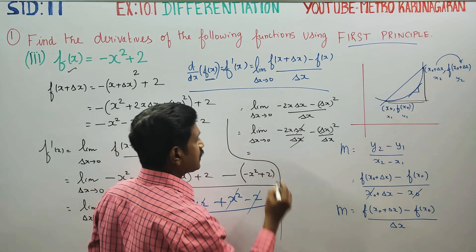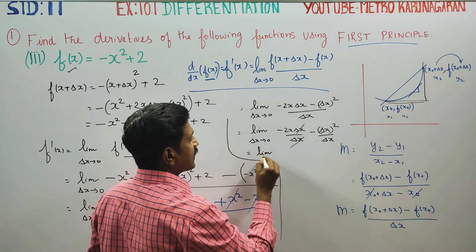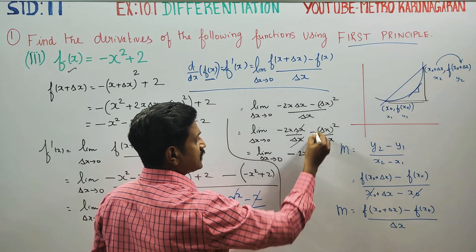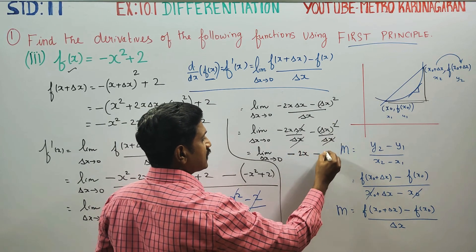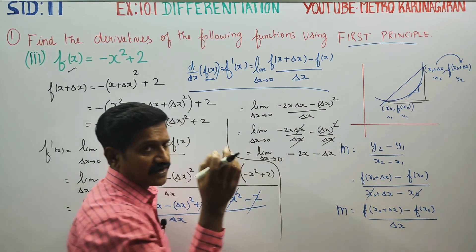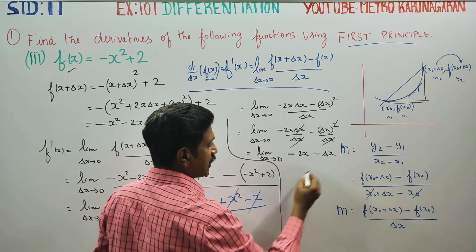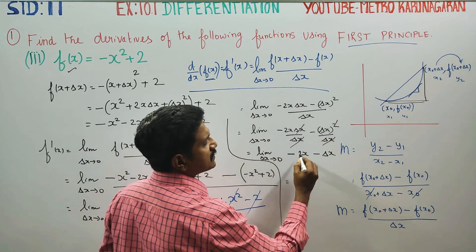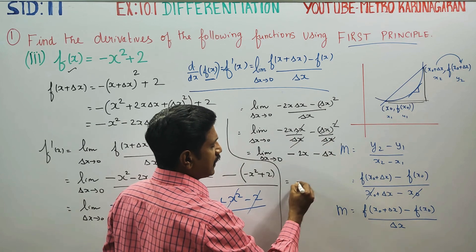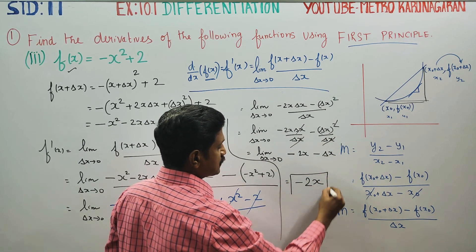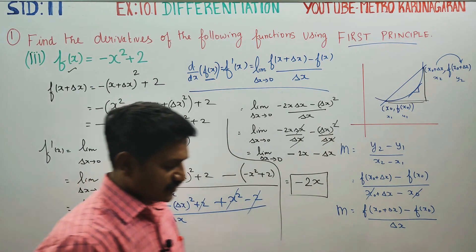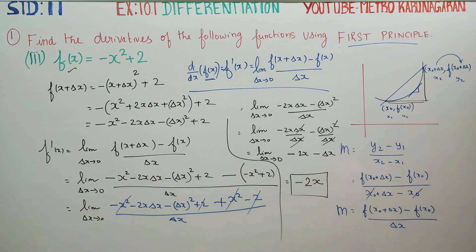As delta x turns to 0, it becomes a very, very small value — nearly 0.0001 — so we ignore it. That means the answer is -2x. So the differentiation using the first principle gives f'(x) = -2x. We have done this using the first principle.